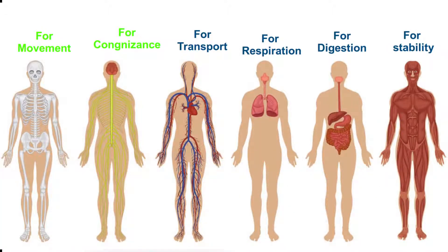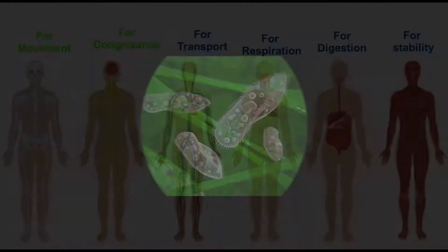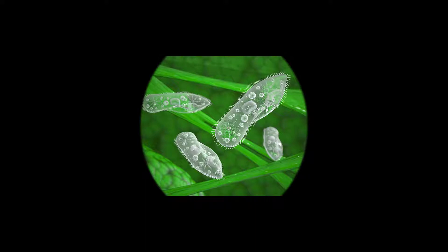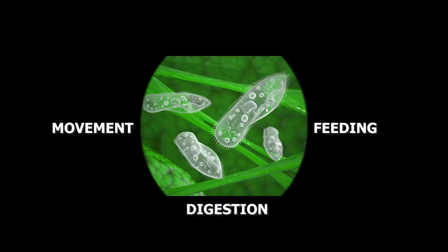We have different organs such as limbs, intestine, respiratory system, etc. to perform different functions. Protozoans have specialized organelles for these activities. They use different organelles for movement, feeding, and digestion.